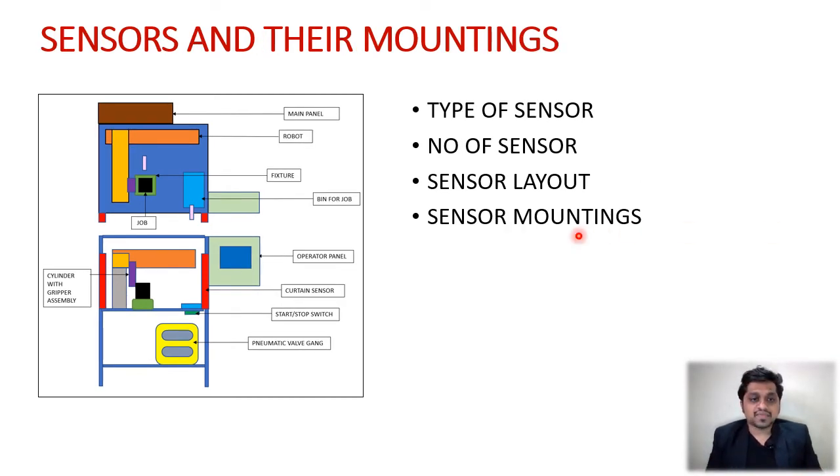I always say that machine is a combination of mechanical things and electronic things, so it's mechatronics. They both go hand by hand. Here in our system we also require some kind of sensors. In order to prevent the human interruptions, we have used the curtain sensor over here.